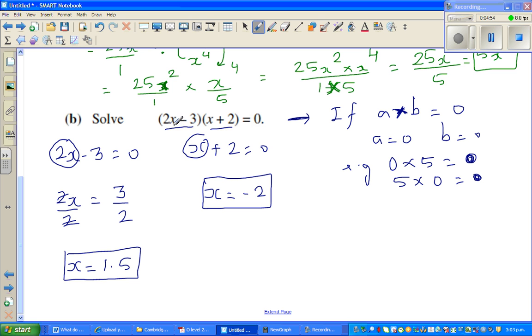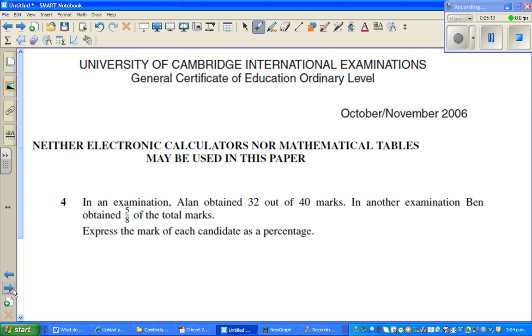When you put x is equal to 1.5 in this equation, 2 times 1.5 is 3. And 3 minus 3 is 0. So this is 0 times anything is 0. And when you put x is negative 2 here, negative 2 plus 2 is 0. And this is 0 times this is also 0.